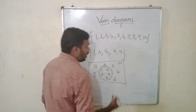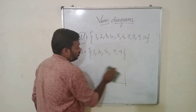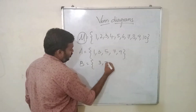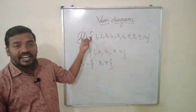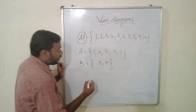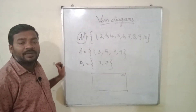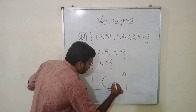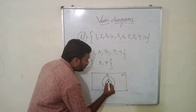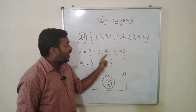Suppose we have another set B in which we have 3 and 7. We need to represent the universal set, set A, and set B in Venn diagram format. That means we need to draw the same as the previous one. This is the universal set. Set B has 3 and 7, and set A has 1, 3, 5, 7, 9.